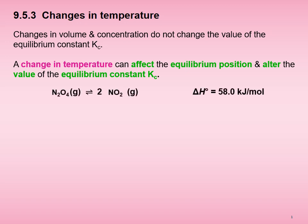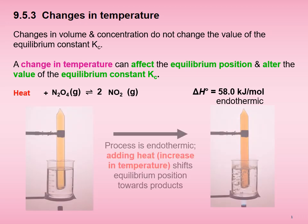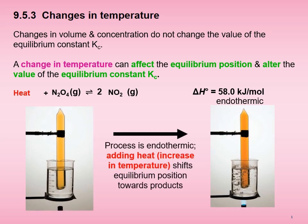For example, the reaction involving N2O4 and NO2 is endothermic, since the enthalpy change in standard state is a positive value of 58.0 kJ per mole. This is denoted by writing heat on the left-hand side of the equation — we treat heat as though it were a reactant. Because the process is endothermic, adding heat, that is increasing the temperature, shifts the equilibrium position towards products.